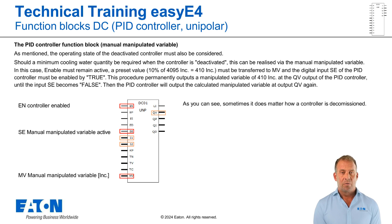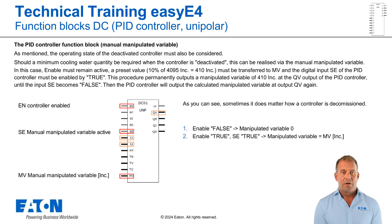Then the PID controller will output the calculated manipulated variable at output QV again. These are the two variants for putting a controller out of operation: first, enable false via manipulated variable 0; second, enable true, SE true via manipulated variable equal to MV in increments.